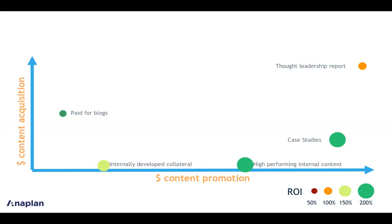If we look at our paid-for blogs, they're not performing so well. Maybe it's the way that we're measuring our blog, or maybe people aren't viewing it and we need to look at the actual promotion of the blog itself. Potentially it's time to change the blog writer, or maybe we bring it in-house to reduce the cost — bringing it down to a lower content acquisition area might bring the ROI up to a satisfactory level. That's a decision we'd need to make internally based on resource availability and who can actually write the blogs, but the message is clear: it's not working and we need to change something.